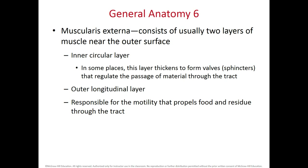The muscularis externa has two layers — inner circular and outer longitudinal — made of smooth muscle. In some parts, the smooth muscle of the inner circular layer forms a thick valve called a sphincter that regulates passage of material through the tract. Between the inner and outer layers we have a nerve plexus called the myenteric plexus, which is responsible for the motility of these two layers, allowing us to move food from proximal to distal areas of the GI tract.